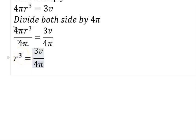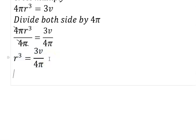We have to make R the subject of the formula, but we are still having this cube here. It's very simple — while eliminating what is disturbing the subject formula, as we do it to one side, we do it to the other side too. This is R cubed, so what we need to do is cube root both sides, so that the cube root can cancel this cube. We are going to cube root both sides.